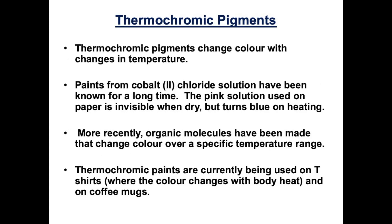The first type of smart material we're going to look at is thermochromic pigments. Thermochromic materials change colour with changes in temperature. Some of the earliest examples of this were cobalt 2 chloride paints that were pink when applied to a surface and then changed to blue when heated. More recently, organic molecules have been used as thermochromic materials, and these change colour over a specific temperature range.